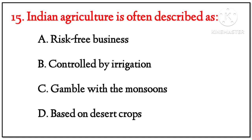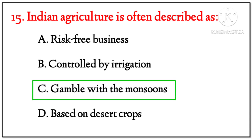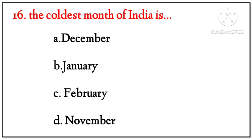(15) Indian agriculture is often described as: Options: Risk-free business, Controlled by irrigation, Gamble with the monsoons, Based on desert crops. Answer: Gamble with the monsoons. (16) The coldest month of India is: Options: December, January, February, November. Answer: January.